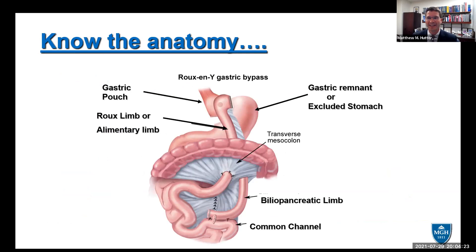The first thing about challenges with anatomy-altering surgery is knowing the anatomy. I want to talk about the Roux-en-Y gastric bypass anatomy. The Roux-en-Y gastric bypass is made up of a gastric pouch—an egg-sized pouch—which is usually separated from the excluded stomach. I prefer the term excluded stomach rather than gastric remnant. Earlier in my career, we asked interventional radiology to put a G-tube into the gastric remnant, and they put it into the pouch instead. So I always call it the excluded stomach.